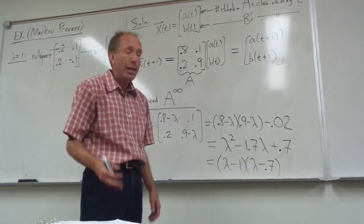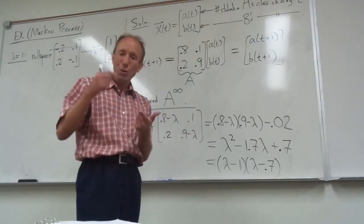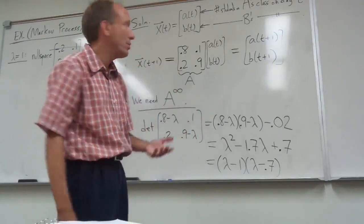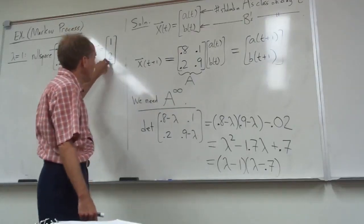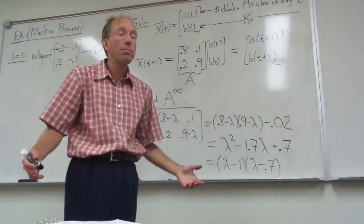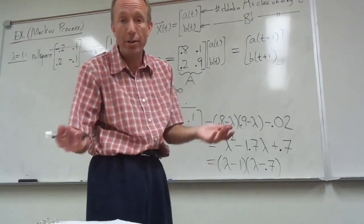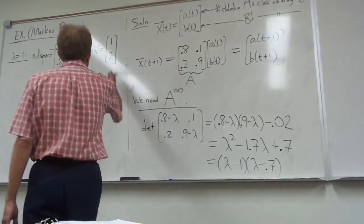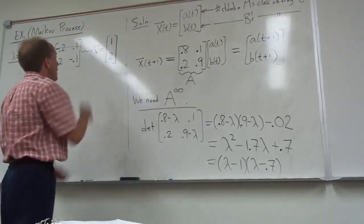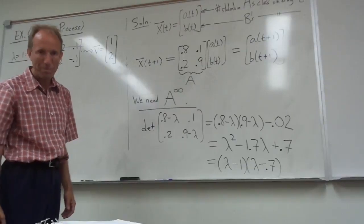Eigenspaces are subspaces. They are closed under addition and scalar multiplication. So if I have the vector point 1 and point 2, I can multiply that by 10 and I'll get another eigenvector. So just to get rid of the decimals, I'm just going to multiply by 10 and write down the vector 1, 2.